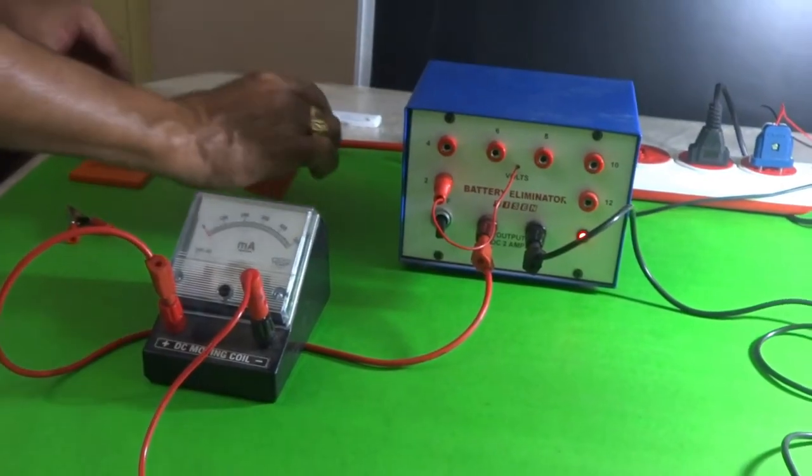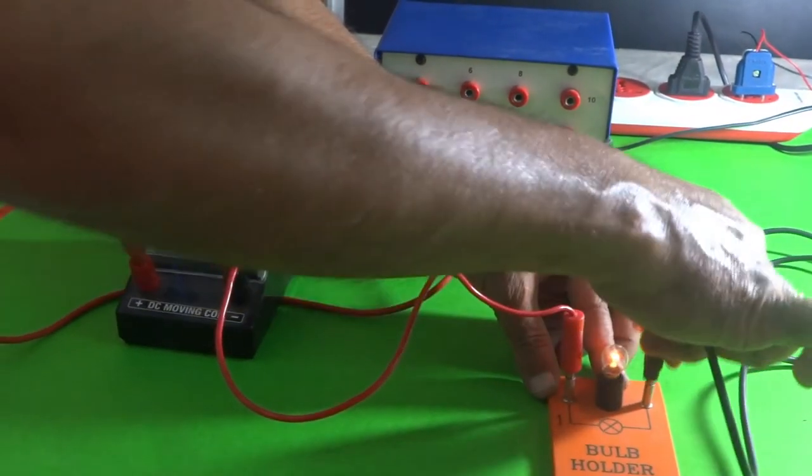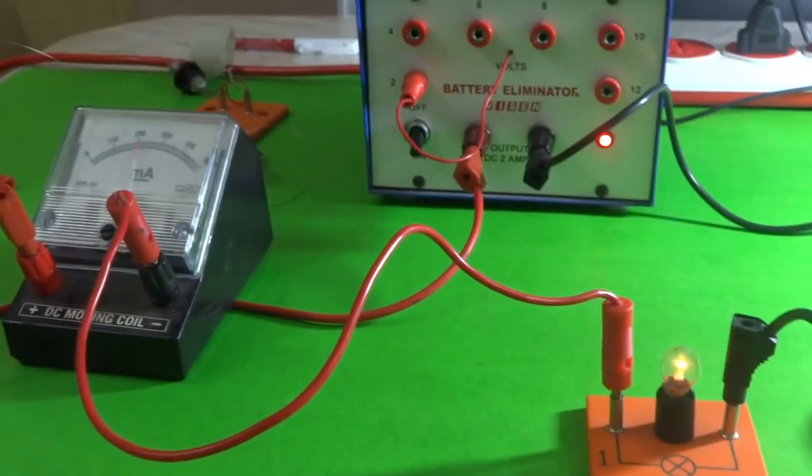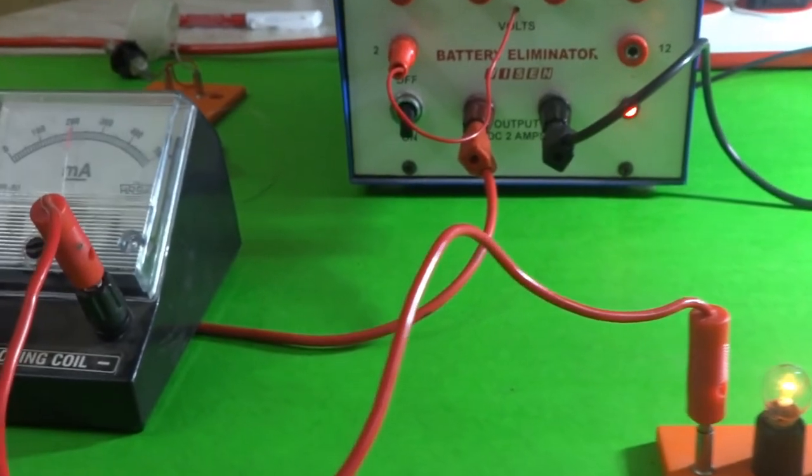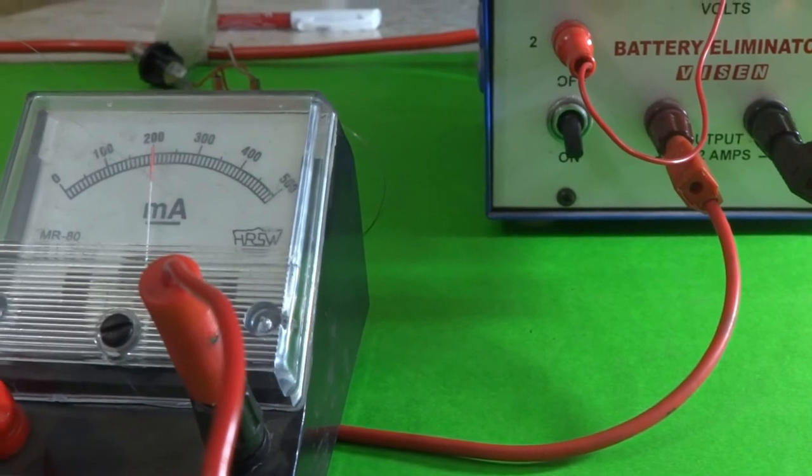Now let us fill this gap with this bulb. Now you can see the bulb is glowing and the reading obtained in the milliammeter is around 210.